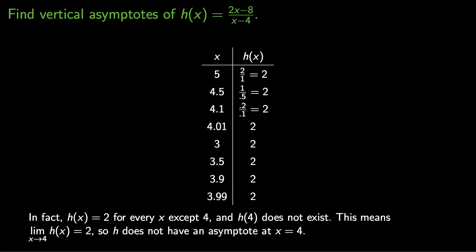And that's very interesting. That actually means that the two-sided limit as x approaches 4 of h of x is equal to 2. And that means, by the definition of vertical asymptote, there is no asymptote at x equals 4.